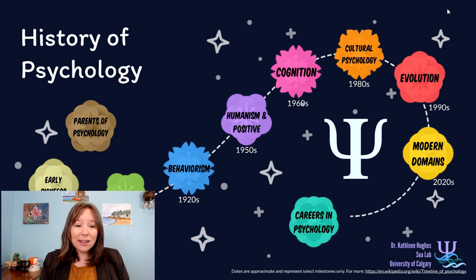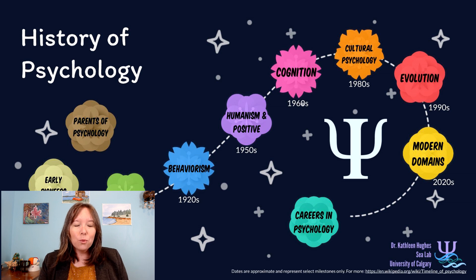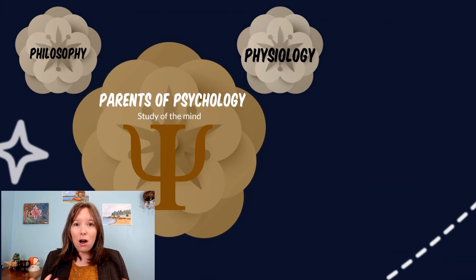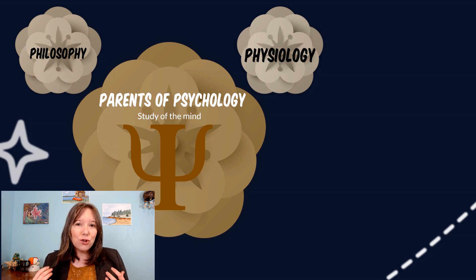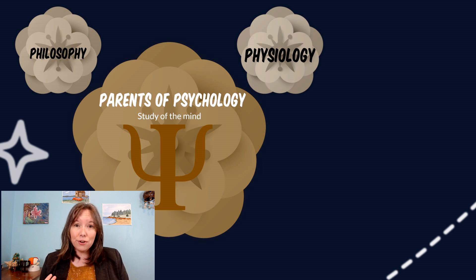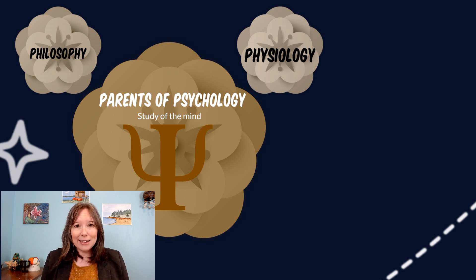Now before psychology was ever actually called psychology, there were predecessors called the parents of psychology, where some content related to psych was discussed. Those two main parents are the schools of philosophy and schools of physiology. First we're going to talk about how in philosophy a lot of psychological phenomena was discussed before psychology was really formalized as an academic discipline.